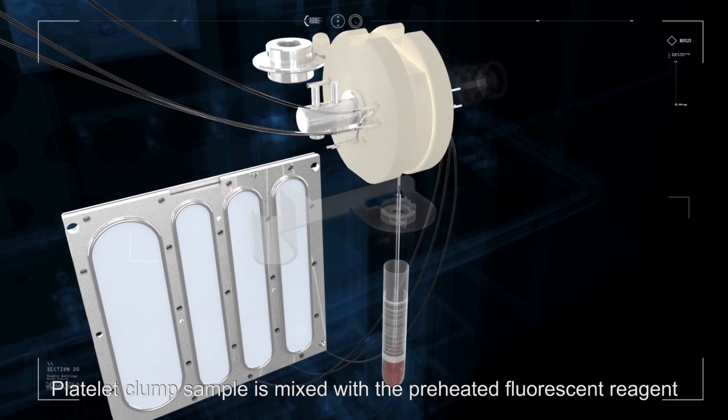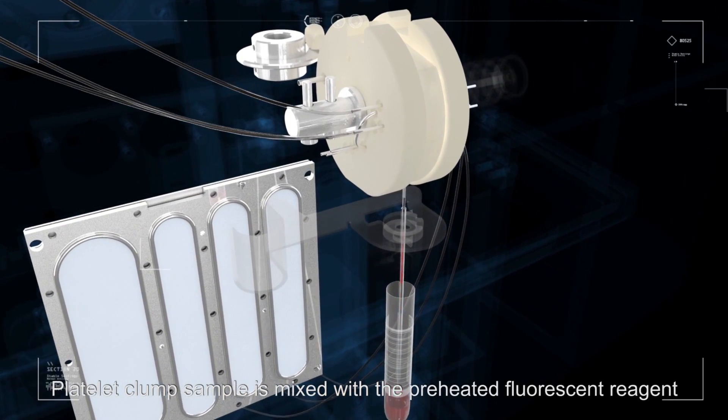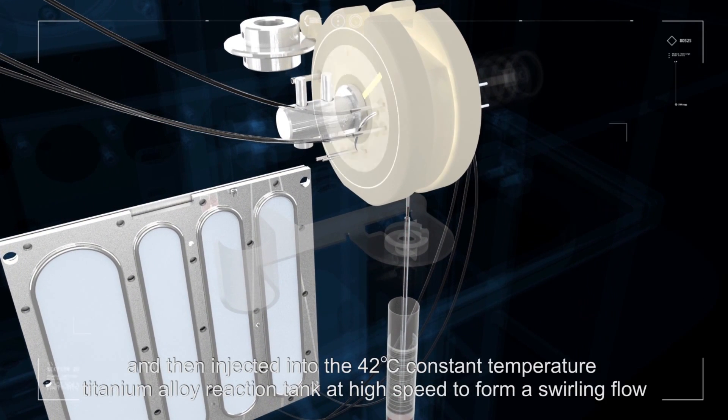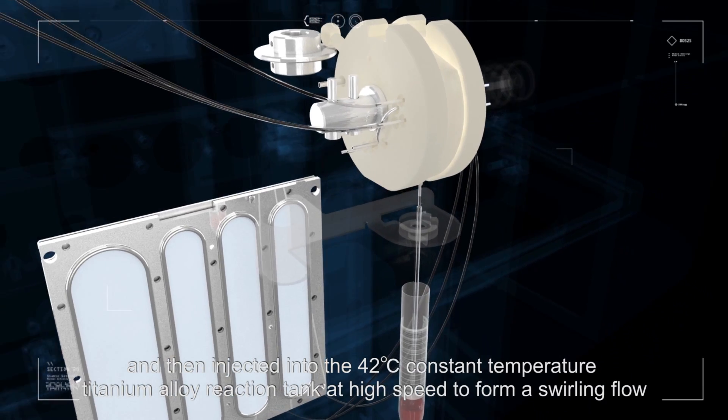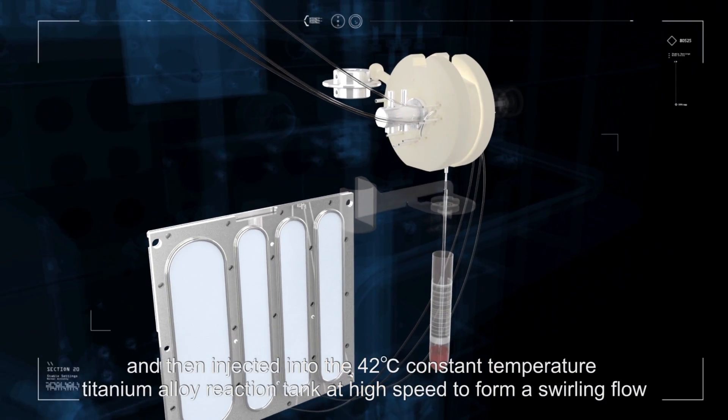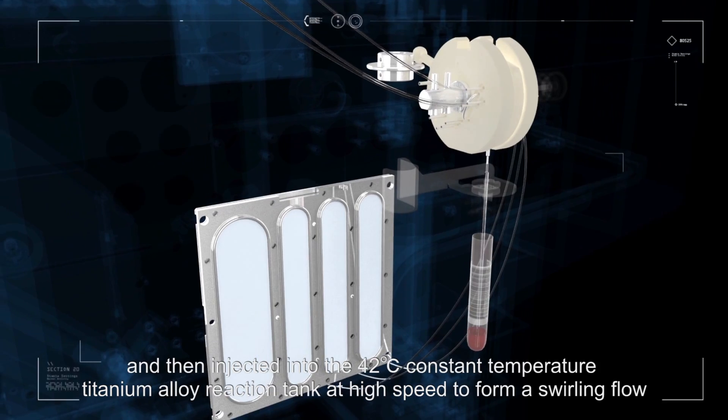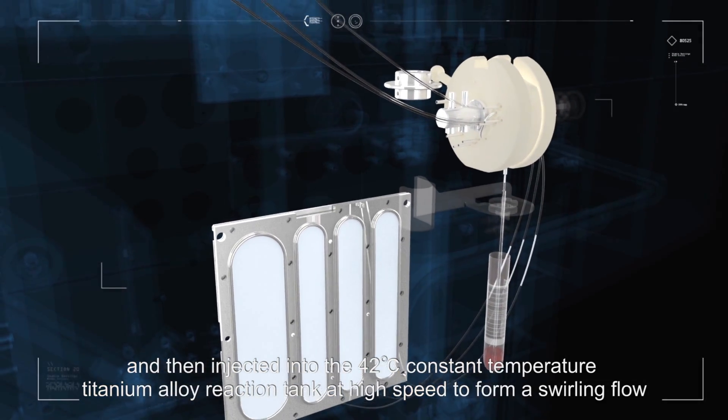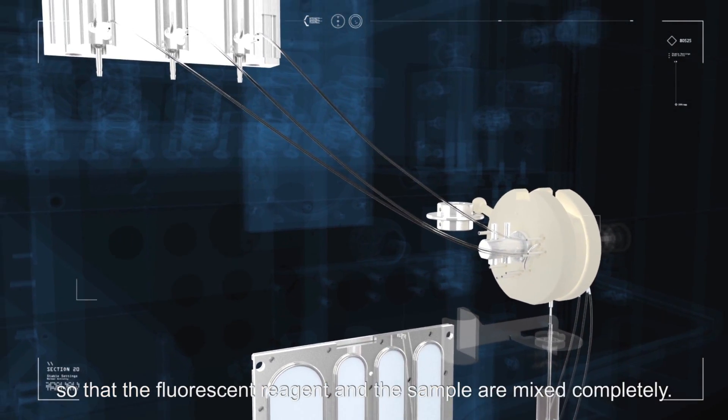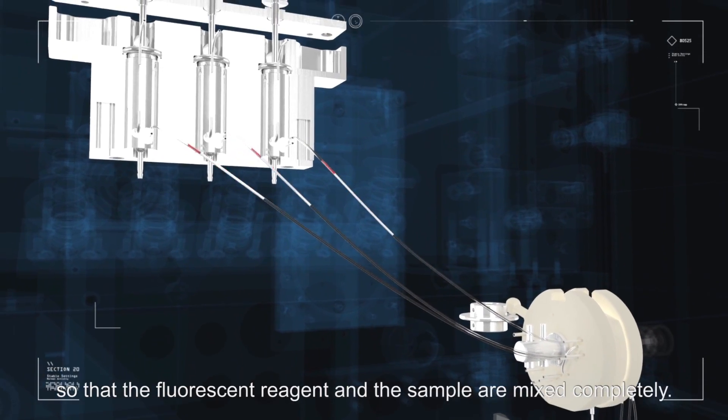Platelet clump sample is mixed with the preheated fluorescent reagent and then injected into the 42 degree Celsius constant temperature titanium alloy reaction tank at high speed to form a swirling flow so that the fluorescent reagent and the sample are mixed completely.